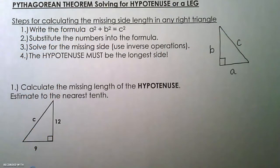Hey guys, in this video we are going to be using Pythagorean Theorem to solve for a missing side of a right triangle. So that side could be the hypotenuse or that side could be a leg.